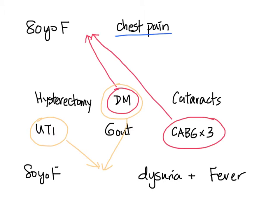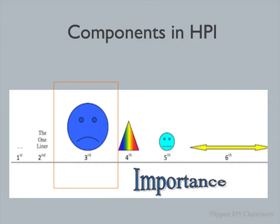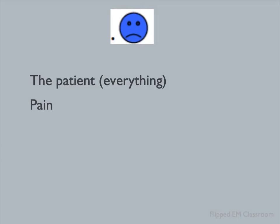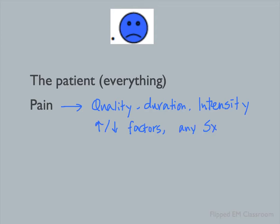Now let's move on to the third part: everything about the chief complaint and the patient. This part should be familiar to you from your history and presenting illness. This is when we ask everything about the presenting symptom. For pain, we may want to ask about quality, duration, intensity, anything that makes it better or worse, and associating symptoms. Once you've exhausted everything about the presenting symptom, this is also where the pertinent positives and negatives come in.